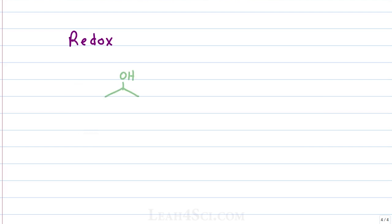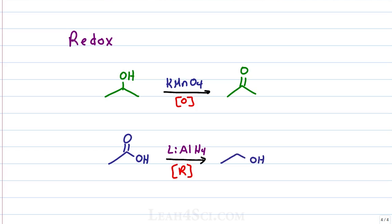For example, if I have a secondary alcohol, we say that it's oxidized if KMnO4 turns it into a ketone. If I react a carboxylic acid with lithium aluminum hydride, we say it's reduced when it's turned into a primary alcohol.